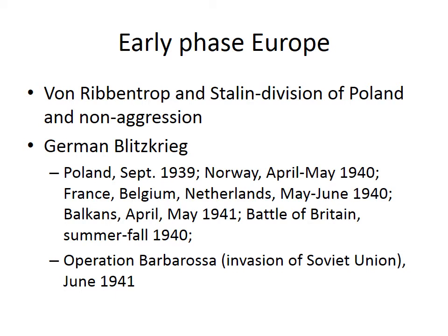Von Ribbentrop returned in late August 1939 with a deal: in exchange for Soviet neutrality, Germany and Russia would divide Poland in half — the Soviet Union actually getting more than half. When Germany invaded Poland from the west, Russia occupied Poland from the east. They divided Poland between them, freeing Hitler to launch the Blitzkrieg. Poland was taken in September 1939.